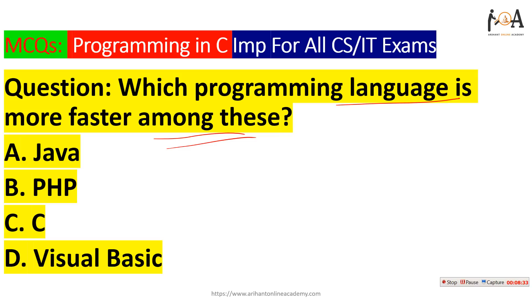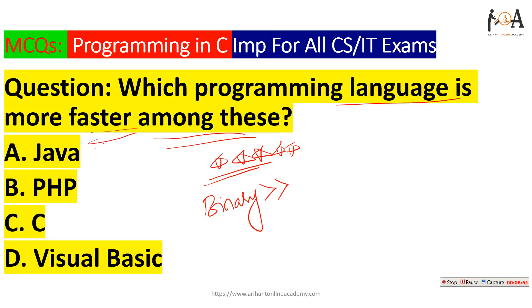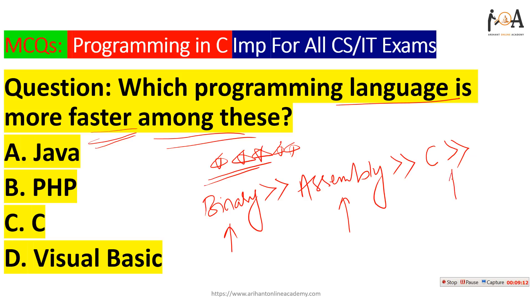The next question asks which programming language executes faster. The execution speed hierarchy from fastest to slowest is: binary language, then assembly language, then C, then C++, then Java, PHP, and Visual Basic. Among the four options given, only C is in the picture, so C is the fastest programming language among the options.